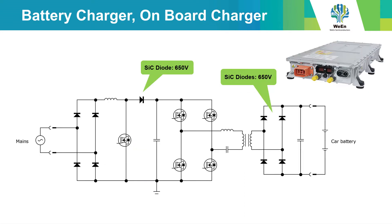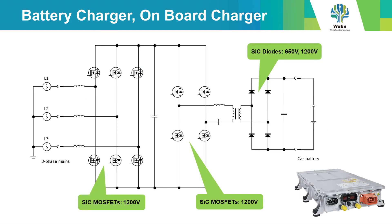Another application is the onboard charger. For lower power onboard chargers, normally 650 volt silicon carbide diodes and MOSFETs are used. For the higher power three-phase applications, 1200 volt SiC components are used.